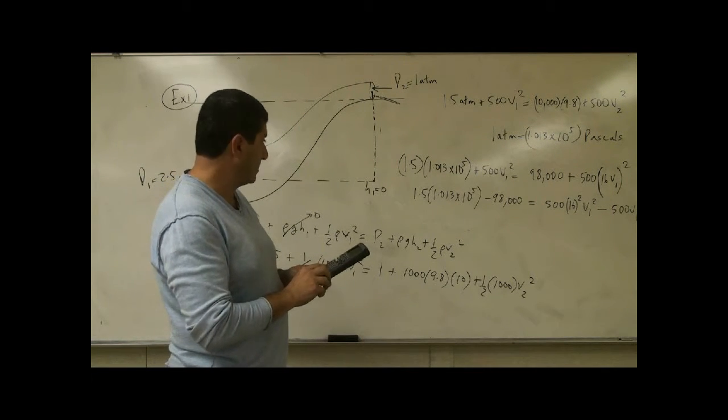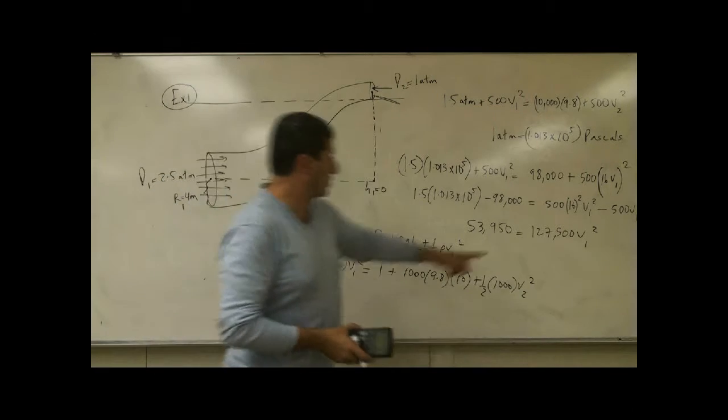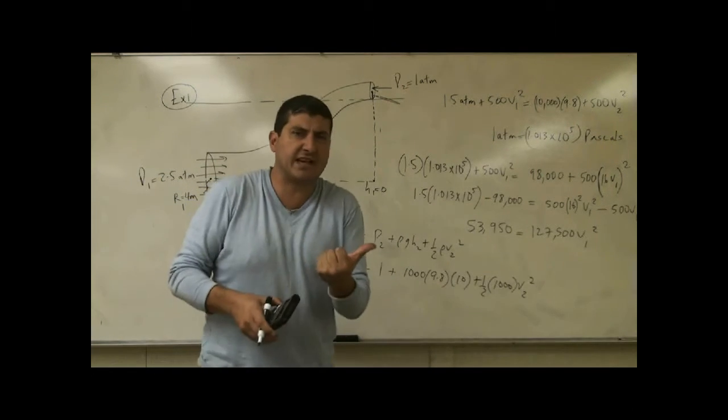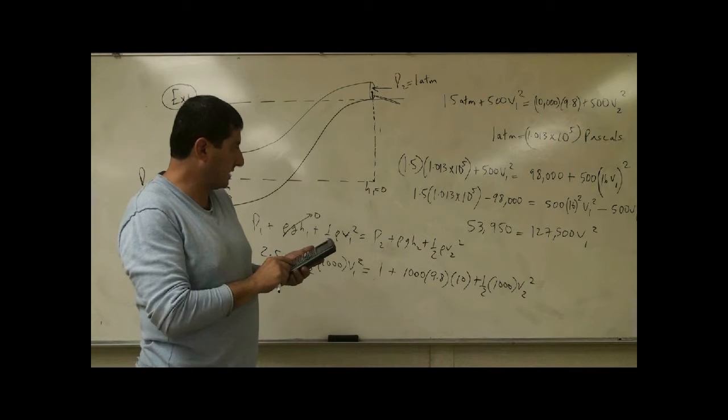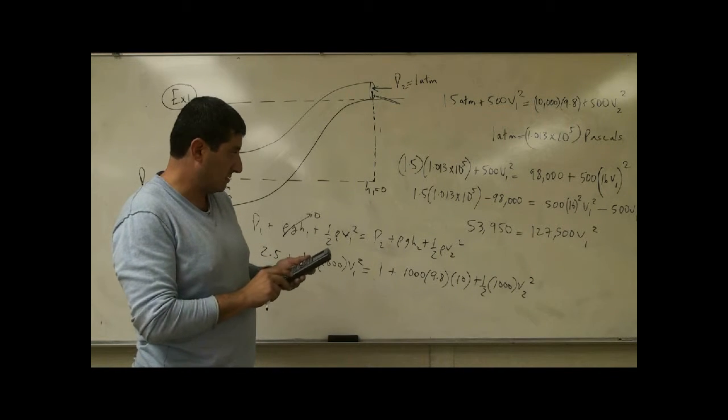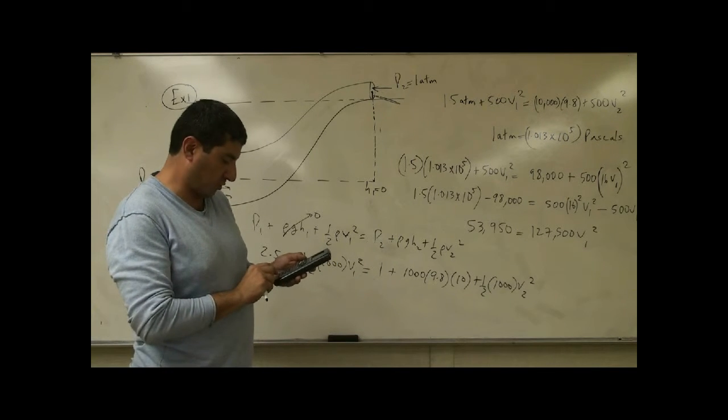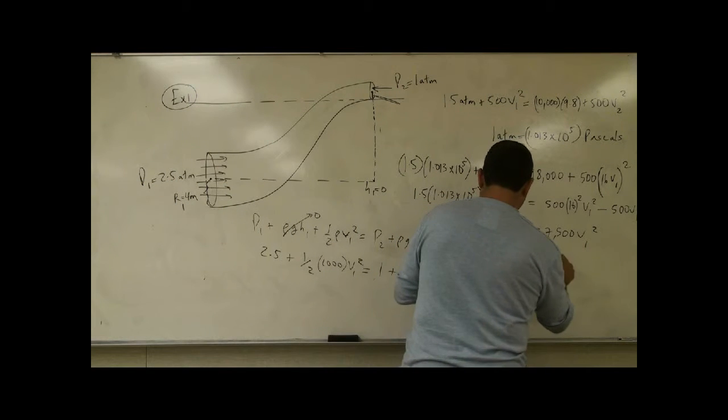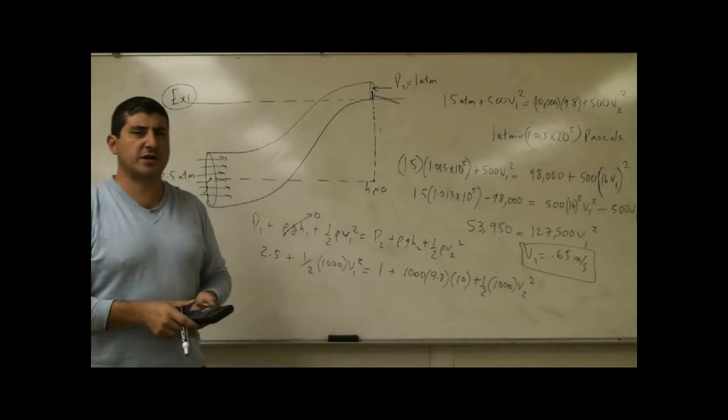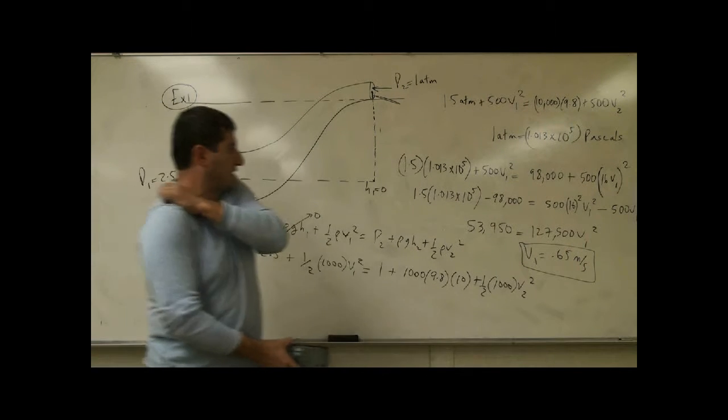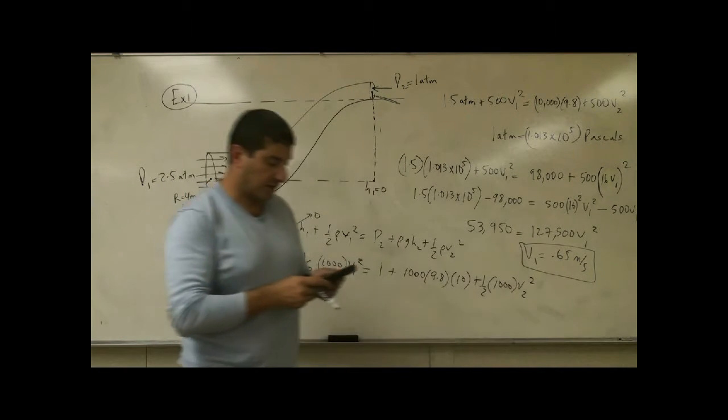1.5 times 1.013 times 1,500. So then I take that, divide it into this and that tells me V1. That's the incoming velocity. It's a very small velocity. So 53,950 divided by the answer. And then you've got square root of that. So you get V1 is equal to 0.65 meters per second. So the incoming velocity of the water is pretty slow. 0.65 meters per second. So we divided this by this and then we square rooted it.